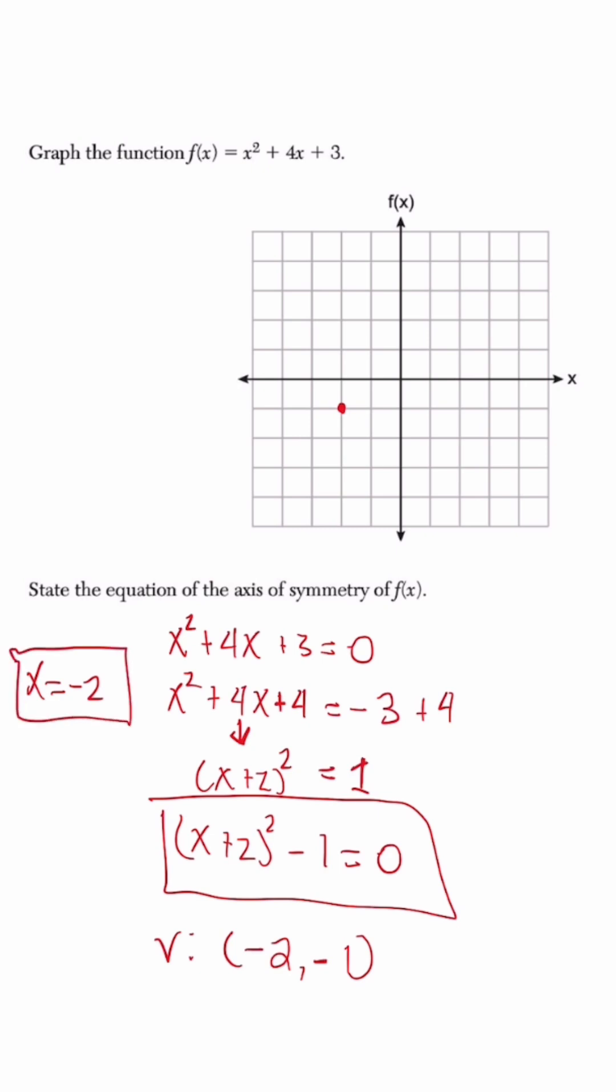And if we remember the relationship when a is 1, we could find the other points. The first point is going to be over 1 and up 1. So we have an x-intercept of negative 1 and an x-intercept of negative 3.